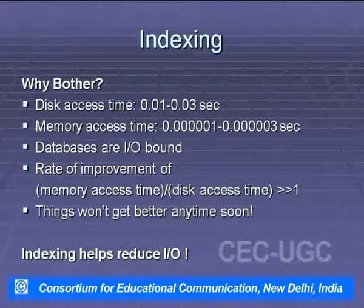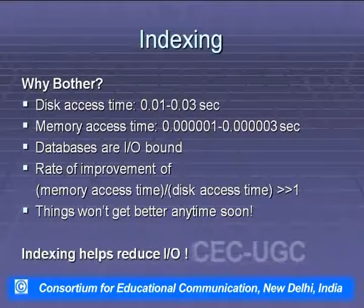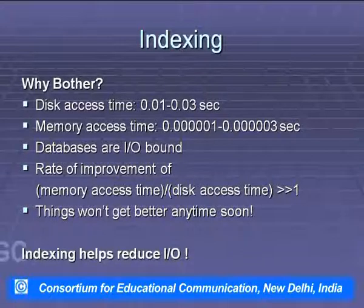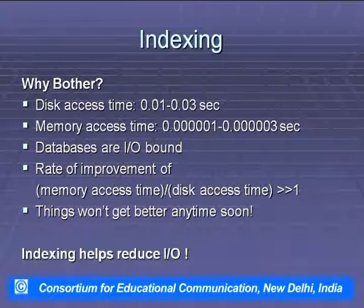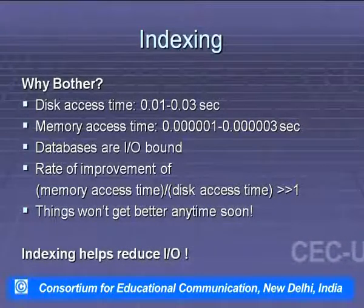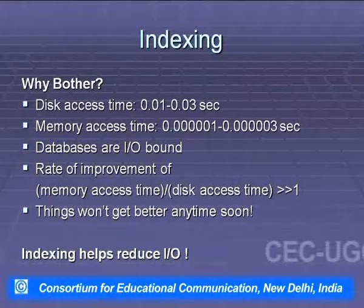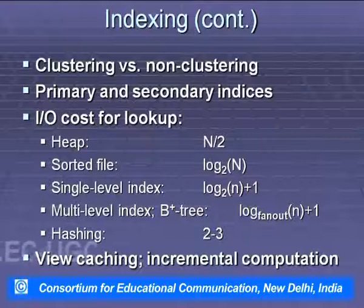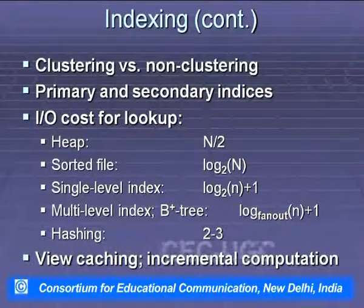Why bother with indexing? Disk access time is 0.01 to 0.03 seconds; memory access time is in microseconds (0.00001 to 0.00003 seconds). Databases are I/O bound, and the rate of improvement of memory access time versus disk access time is less than one — things won't get better soon. Indexing helps reduce I/O. Types include clustering versus non-clustering, primary and secondary indices, with structures such as heap, sorted file, single-level index, multi-level index, B-tree, and hashing.